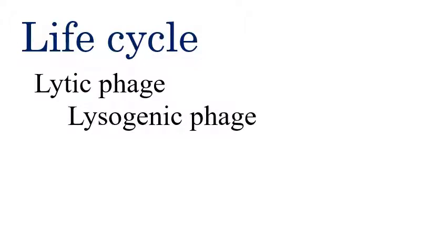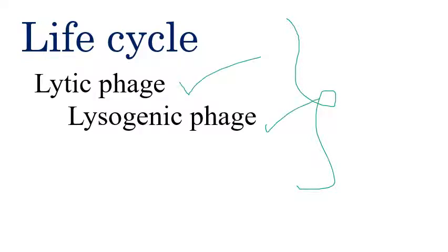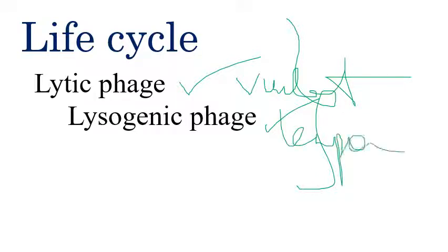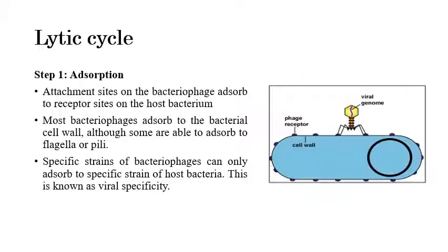Coming to the life cycle of bacteriophages, there are two types: the first is lytic phase, and the second is lysogenic phase. Lytic phase is otherwise called virulent phase, whereas lysogenic phase is otherwise called temperate phase.